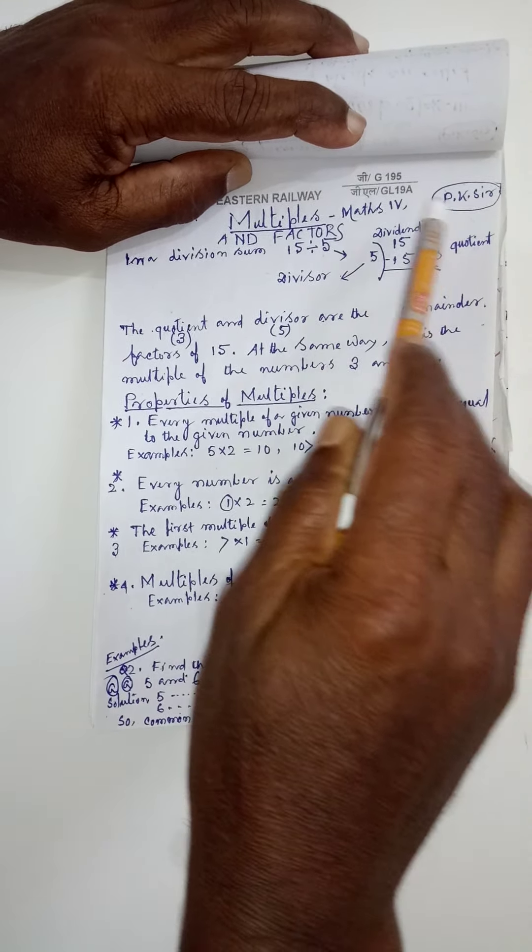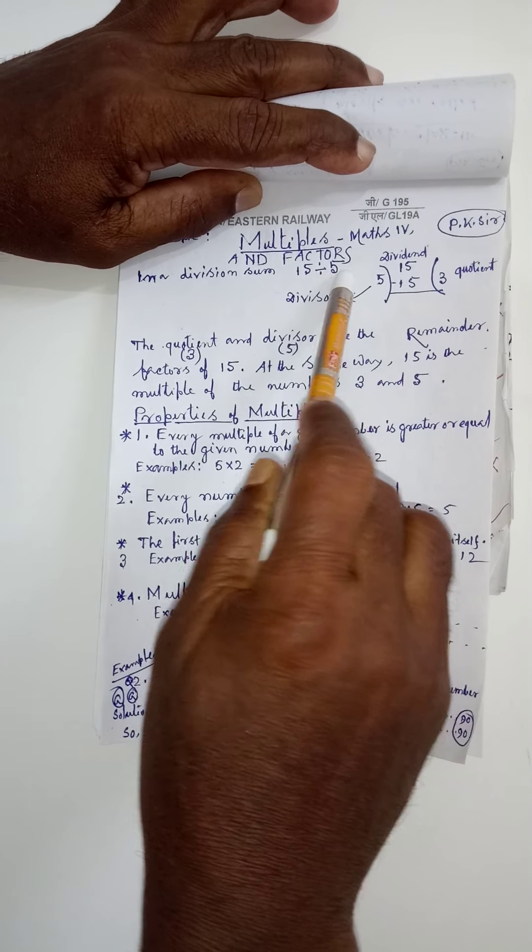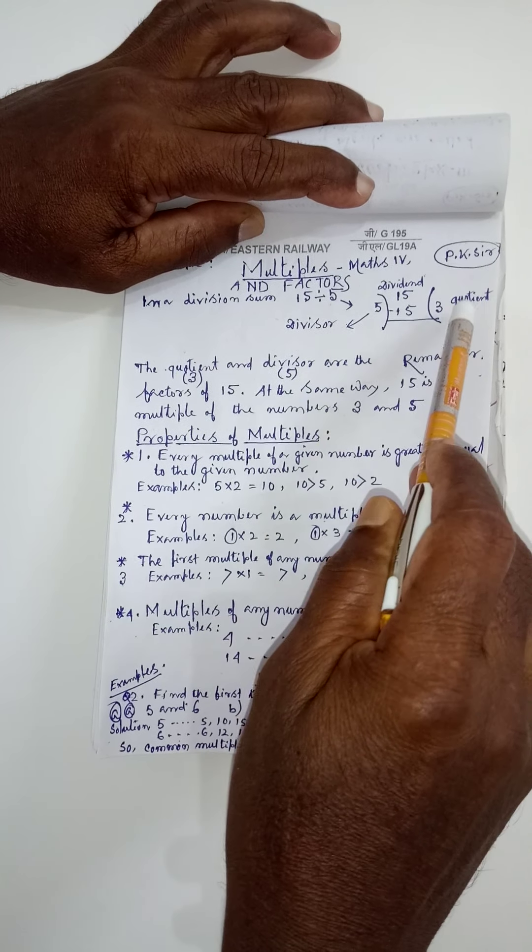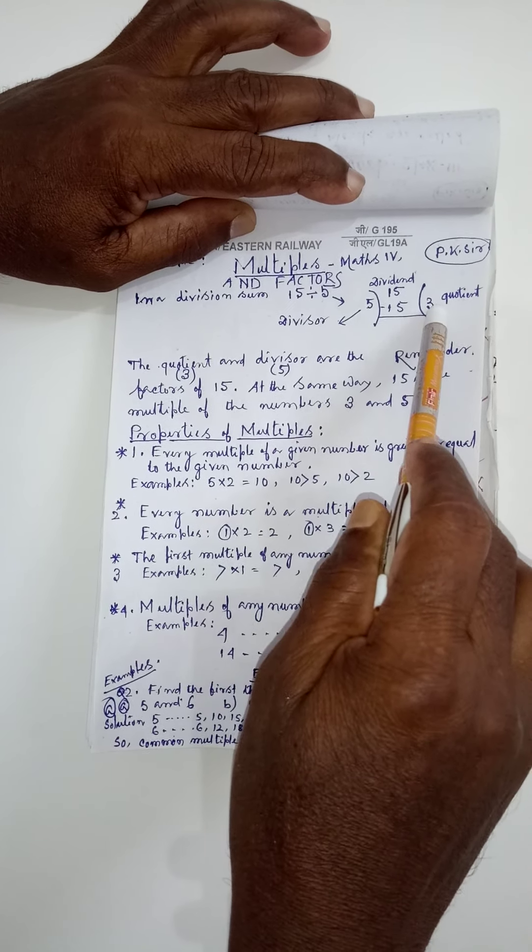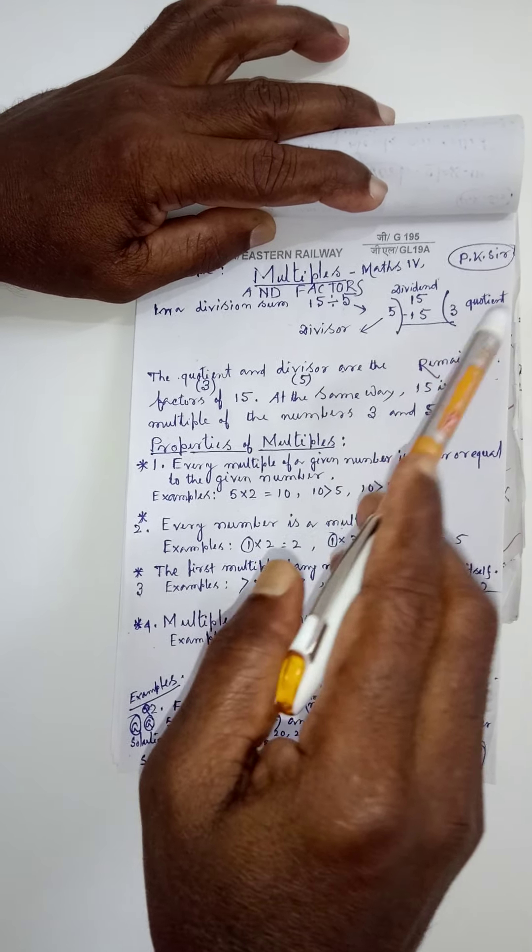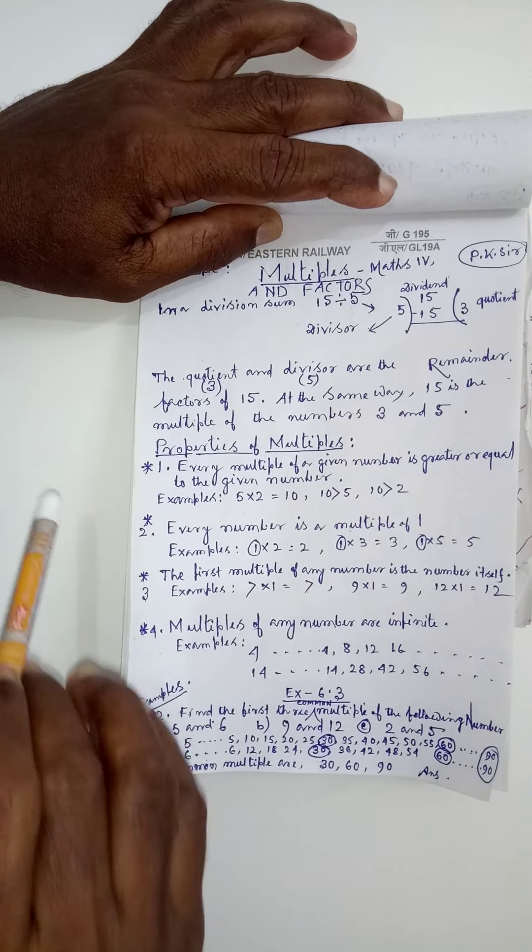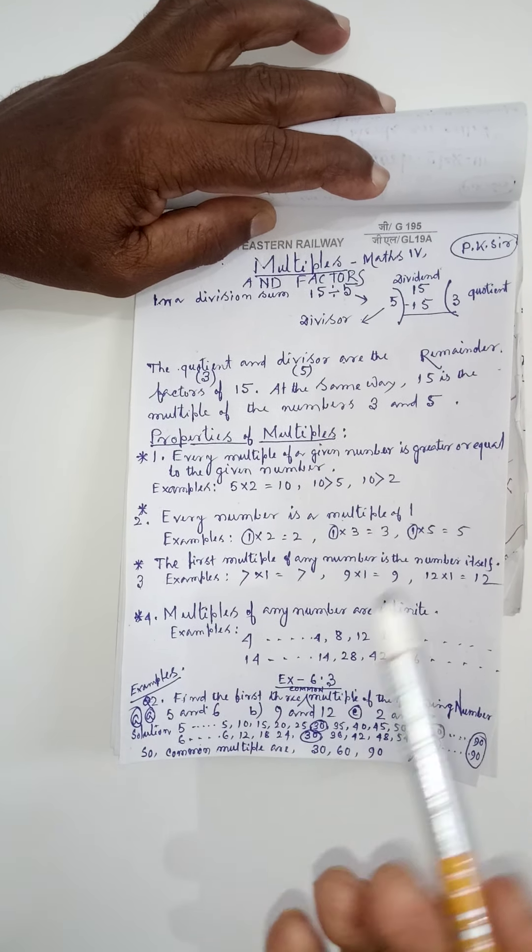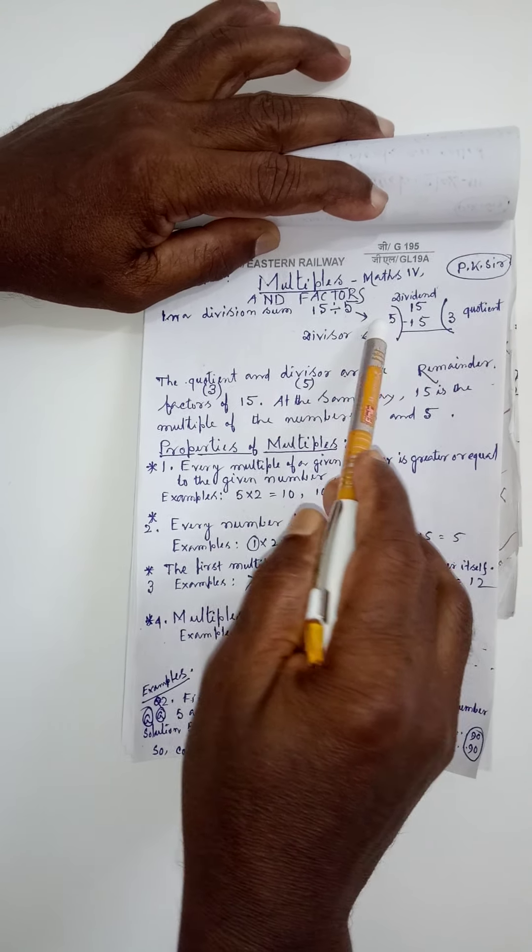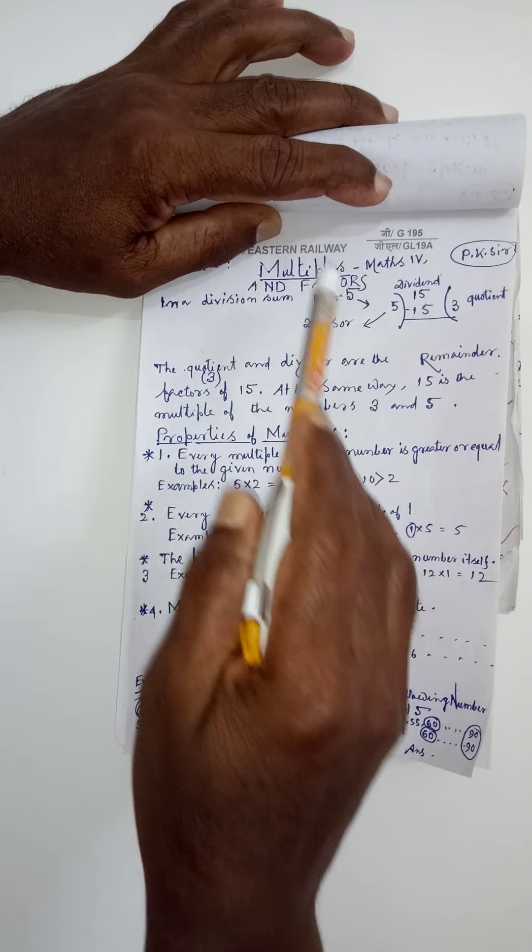These four parts are there in a division sum. Suppose I am dividing 15 by 5. 5 here is the divisor. And after dividing, getting the result, that is quotient is 3. This quotient 3 and 5 are the factors of 15. Now, I think you are clear what are factors. This quotient and divisor 5 and 3 are the factors of 15.